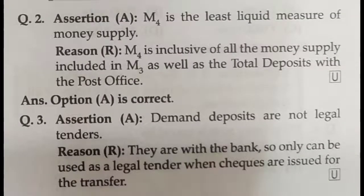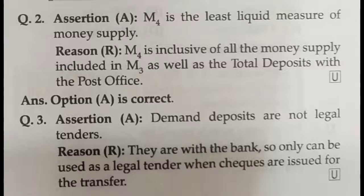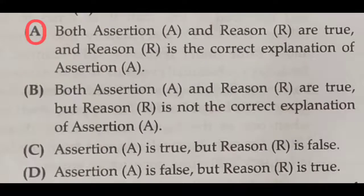Assertion-reason question number two. Assertion: M4 is the least liquid measure of money supply — that is correct. Reason: M4 is inclusive of all money supply included in M3 as well as total deposits with the post office — that is also correct. So both assertion and reason are true — option A is the correct answer.